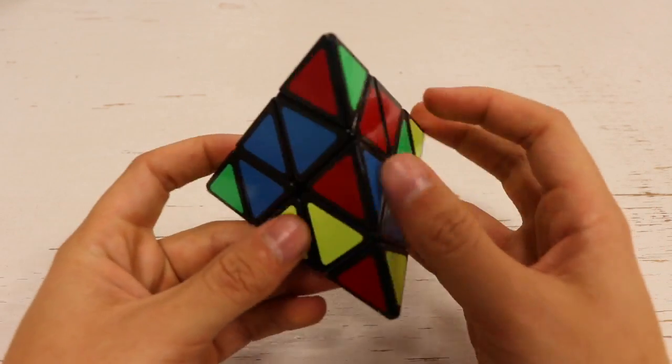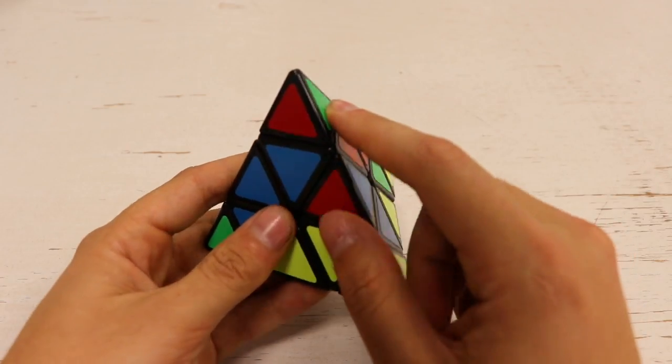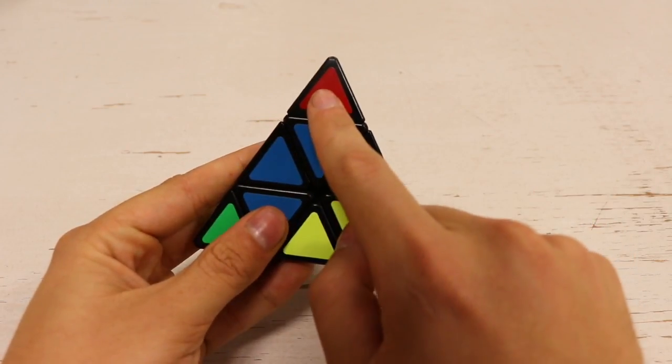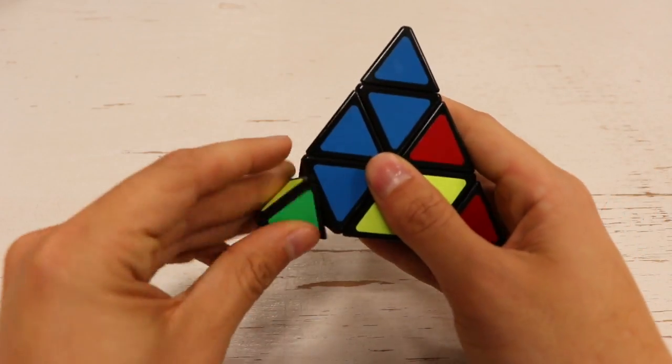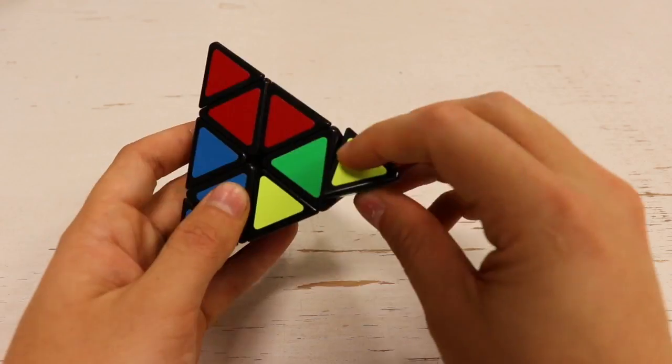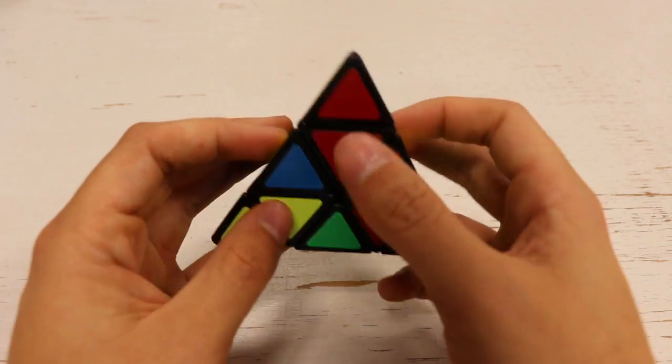The first thing when solving a Pyramix is to align these tips. You may notice this is blue and this is red - that's wrong. So what we can do is rotate this and that matches. We'll do that for all the other ones. Perfect, we have all our tips lined up correctly.